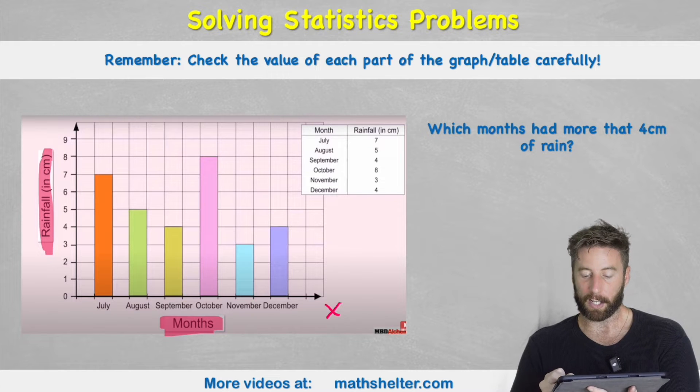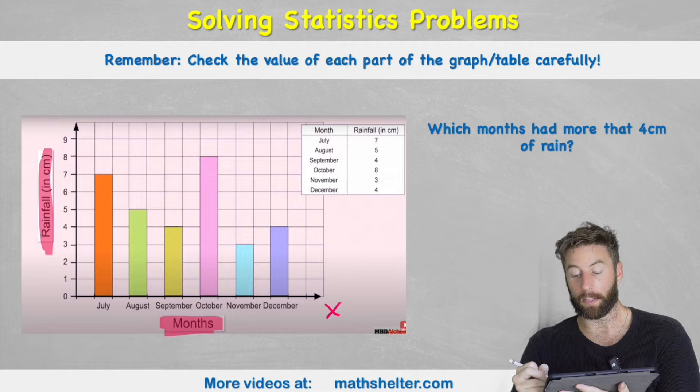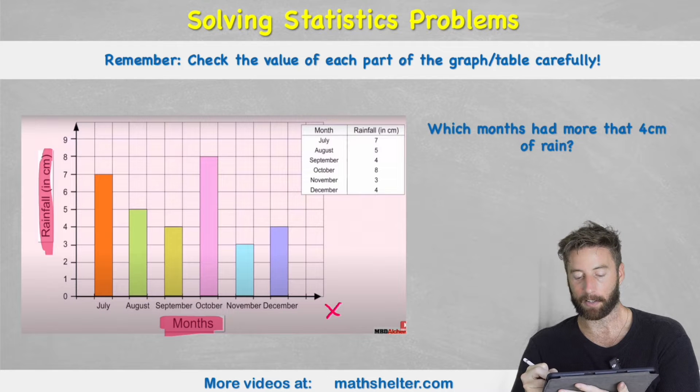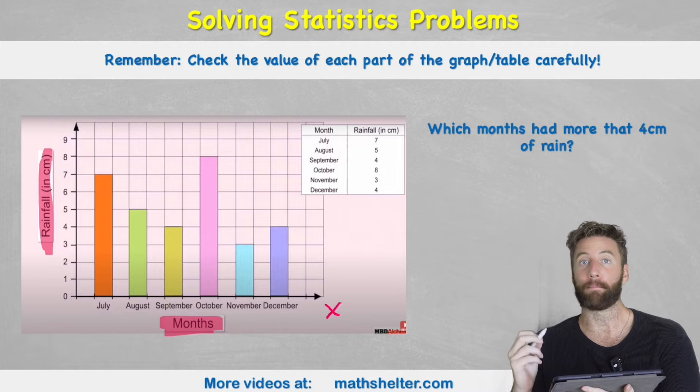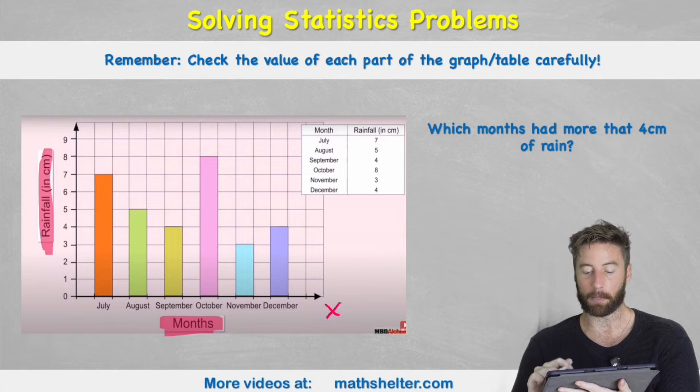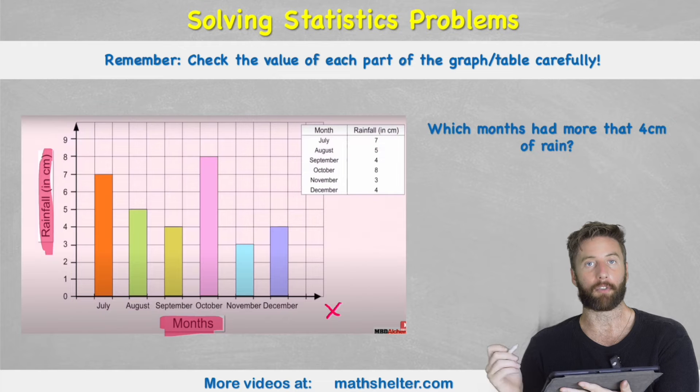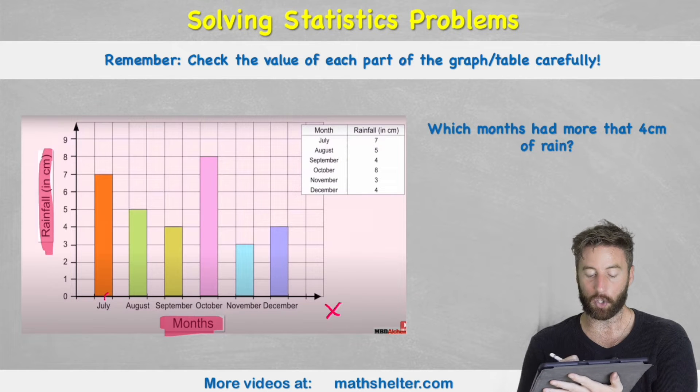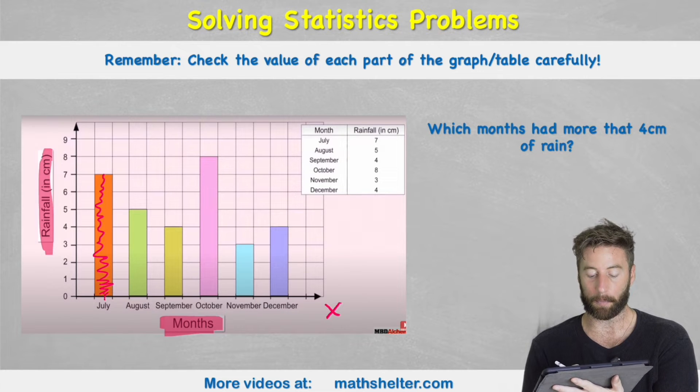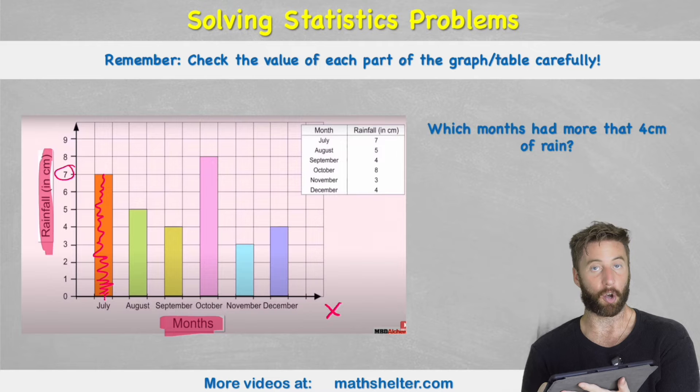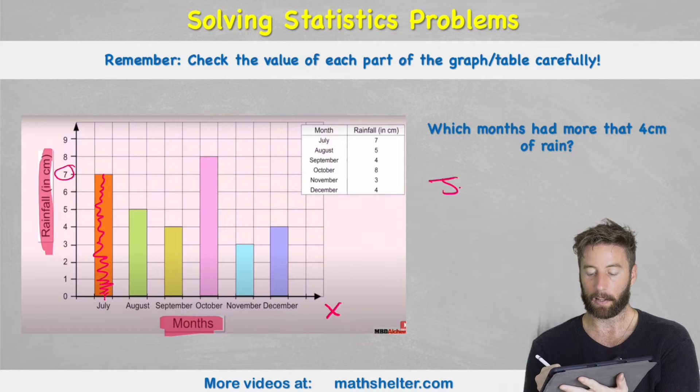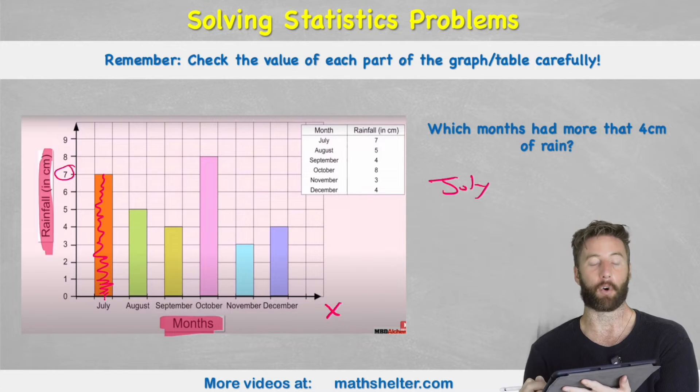But then we have this question that says which months had more than four centimeters of rain. So which months had more than four centimeters of rain? Well first let's look at our bars then. So in July we can see that we can come up the bar all the way to the value of seven. So July has more than four.